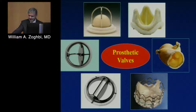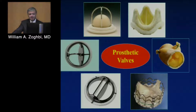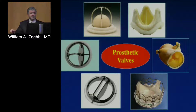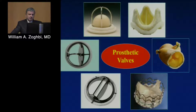Rarely nowadays are we seeing a ball-and-cage valve, but from time to time they'll pop in. I think within the next five to ten years, probably you won't see them at all. Most of the mechanical prostheses we see, at least in this country, are bi-leaflet valves, although from time to time we still see mid-halls or single leaflet prostheses.